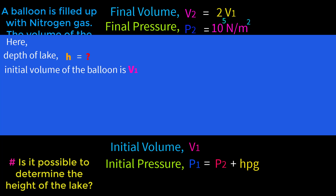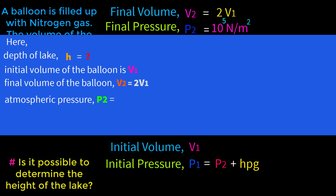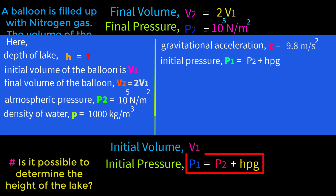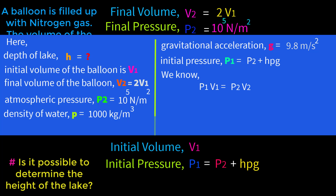Now let us write the solution systematically. Depth of lake: H = ? Initial volume of balloon: V1. Final volume at the surface: V2 = 2V1. Atmospheric pressure: P2 = 10⁵ N/m². Density of water: ρ = 1000 kg/m³. Gravitational acceleration: g = 9.8 m/s². Pressure at the bottom: P1 = P2 + hρg. According to Boyle's law: P1 × V1 = P2 × V2.